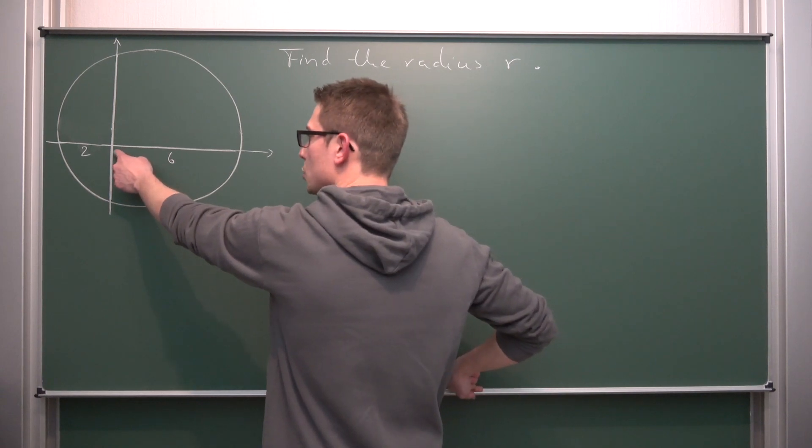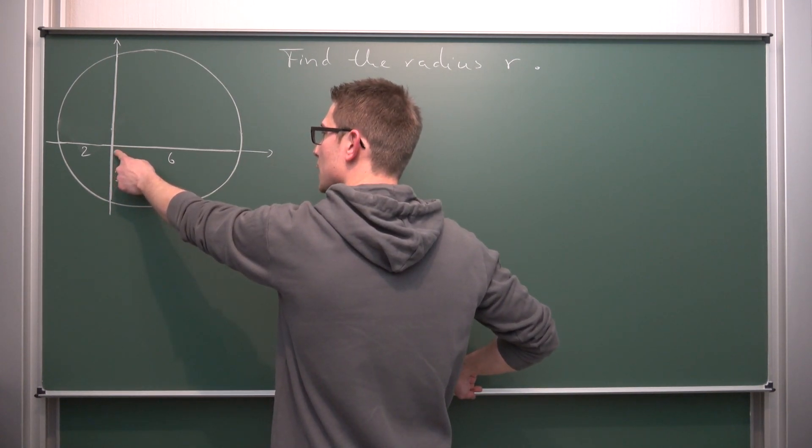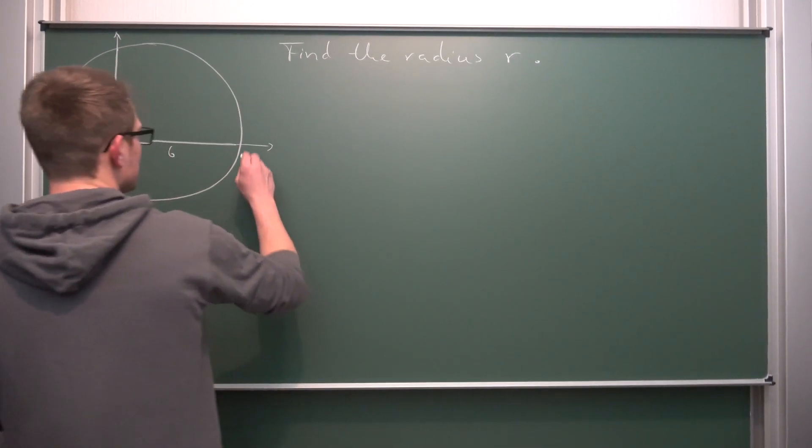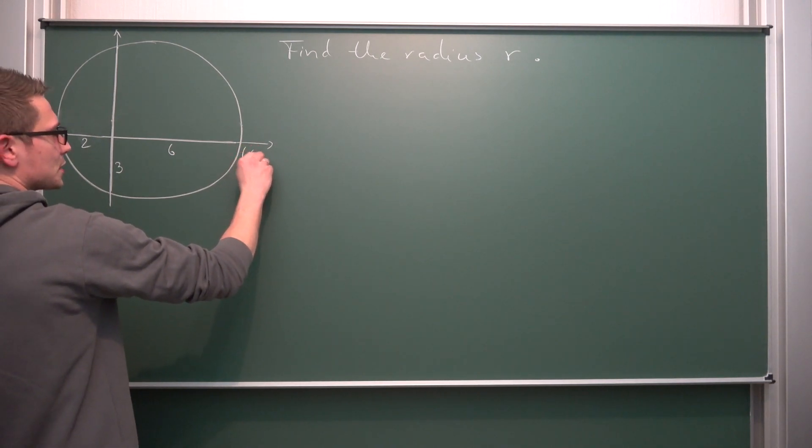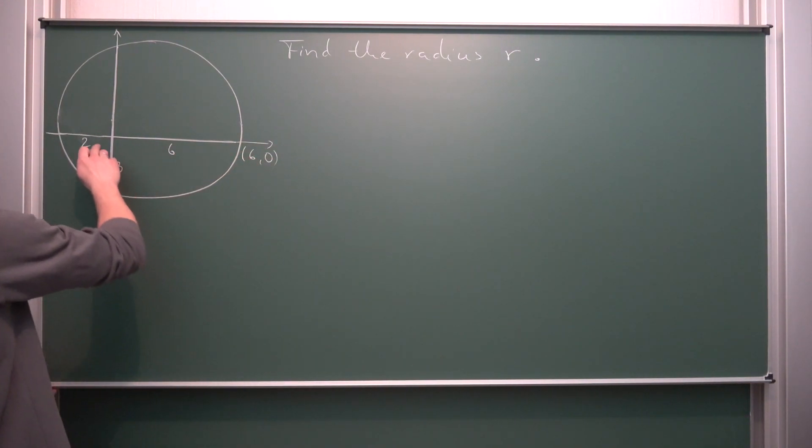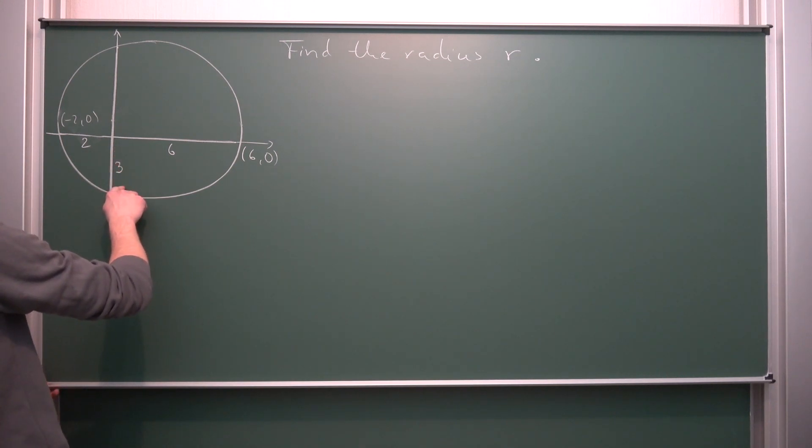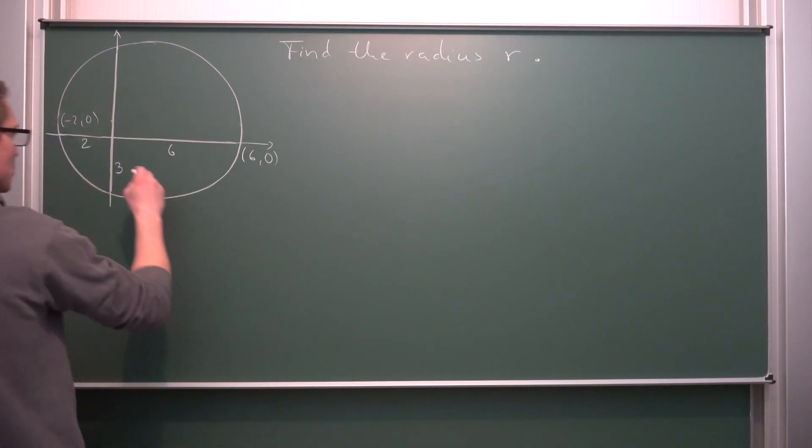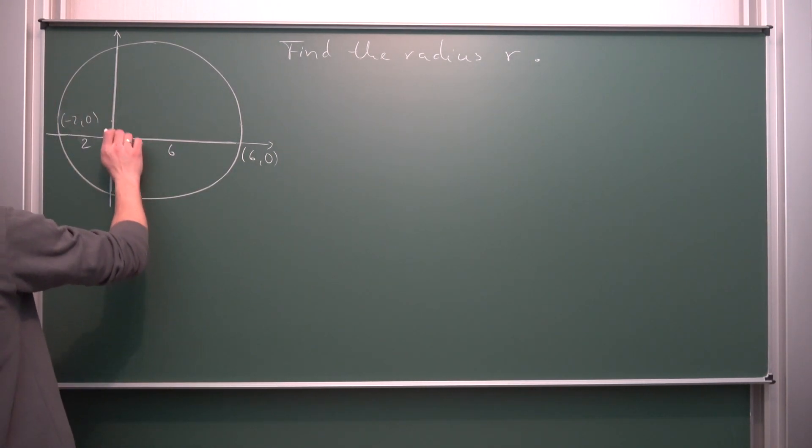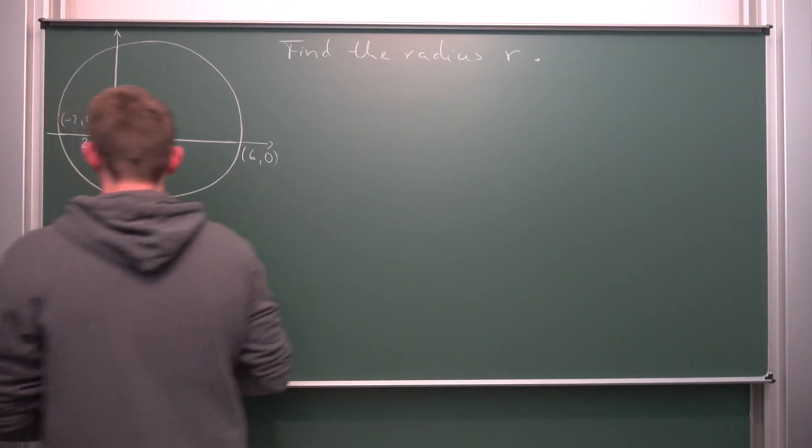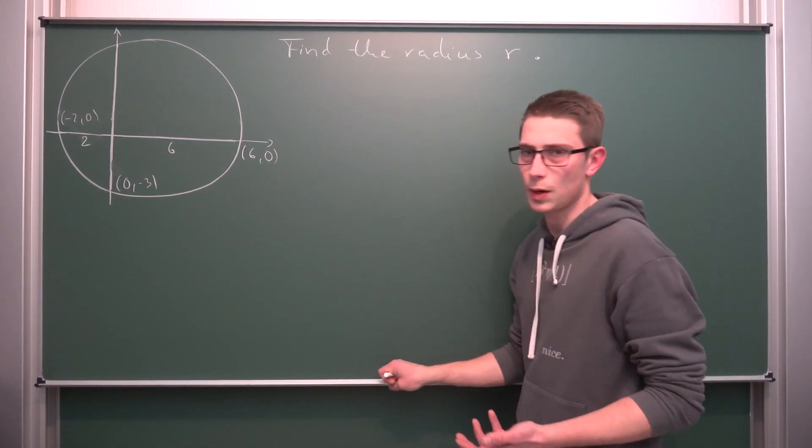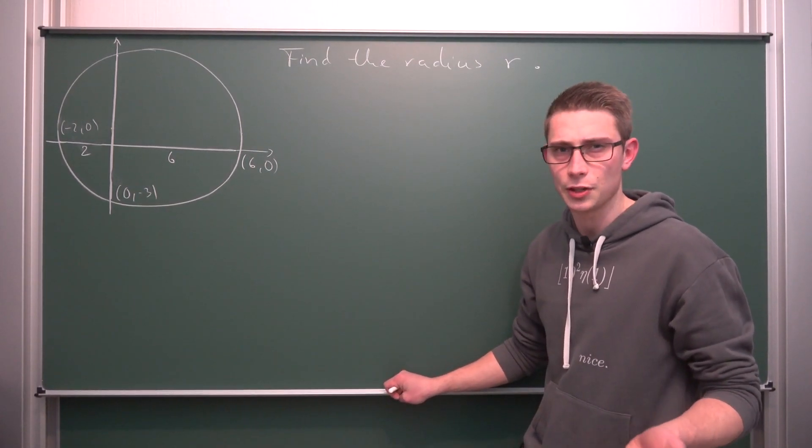We know that this right here is the origin. So if we go on the x, x is 6 units to there. This point has the coordinates 6 and 0. Here, 2 units in a negative x direction. So this point right here is negative 2 and 0. And right here, 3 units in a negative y direction. So this should give us 0 and negative 3 in our case.